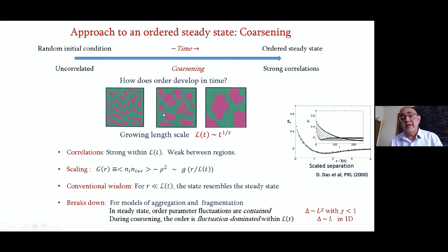How does the order develop in time? The traditional picture, which is of course correct, has the essential insight that there is a growing length scale, which I denoted by script L(t), which grows as a power law in t, and here it is depicted. These patches are growing, and there's strong correlation within patches and weak correlations between patches.